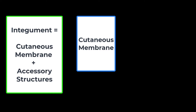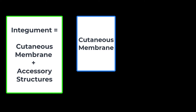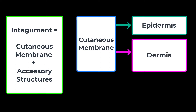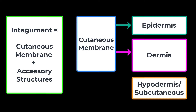The cutaneous membrane is comprised of an epidermis, which is a stratified squamous epithelium, overlying the dermis, which is our connective tissue layer. Below the cutaneous membrane, we have the hypodermis, also known as the subcutaneous, which is not part of the integument but directly underlies it and connects it to deep structures within the body.